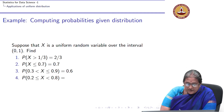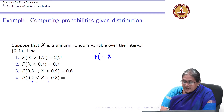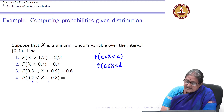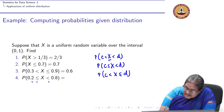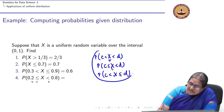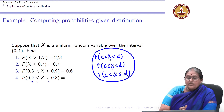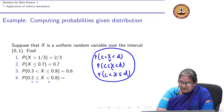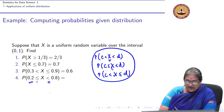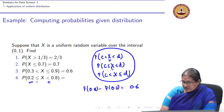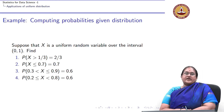Similarly, because X is a continuous random variable, P(C < X < D) equals P(C ≤ X ≤ D). For probability 0.2 ≤ X < 0.8, we get F(0.8) minus F(0.2), which again gives 0.6, as displayed on the screen.